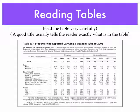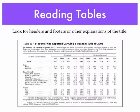So this table tells you about students who reported carrying a weapon from the years 1995 to 2005. Look at the headers and the footers for other explanations of the title. Just because the title tells you this is talking about data or survey information collected from students in grades 9 through 12 who reported carrying a weapon, you may want to know a little bit more. Reading the headers and footers will give you additional information and make the table more clear.